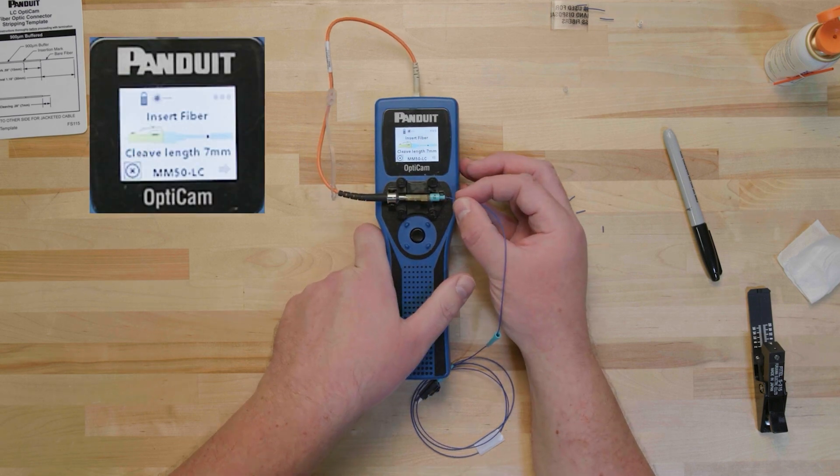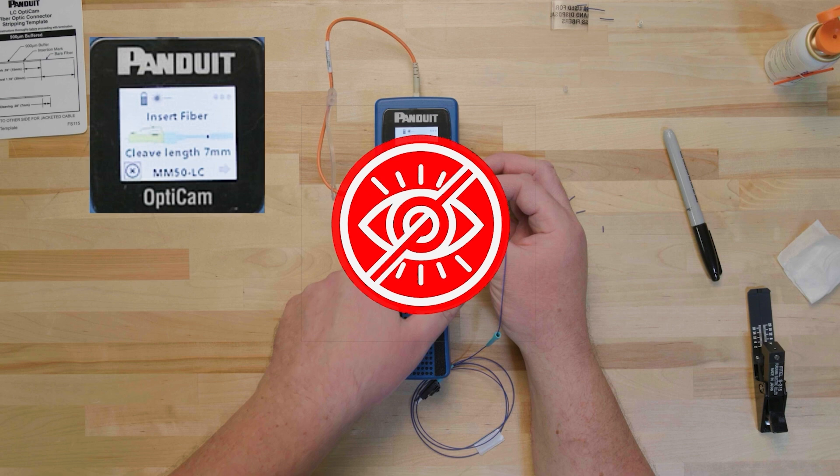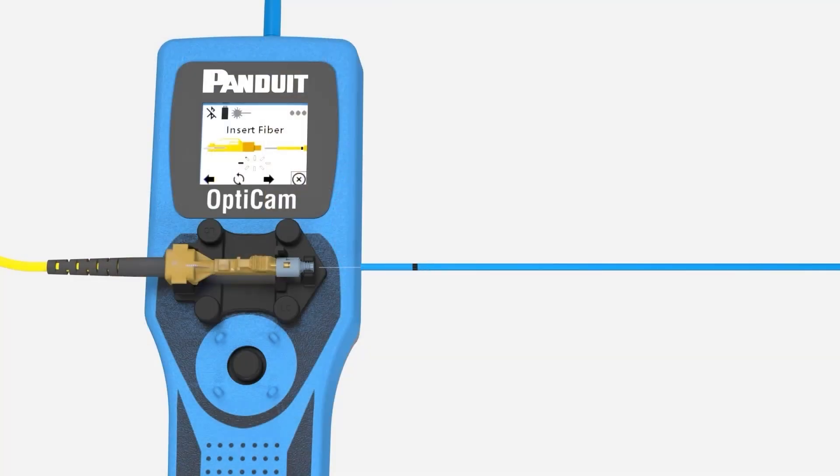Warning, do not look directly into the rear of the connector when lining up the fiber with the insertion tube. Even though it is not visible, there is an active laser present. Gently advance the fiber until it stops, indicating it has mated with the fiber inside the connector. The insertion mark on the buffer should line up with the end of the connector, and the screen should switch to a cam and test message.